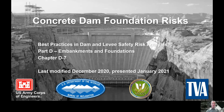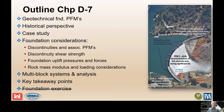Here is the outline for chapter D7. We have a summary of the primary geotechnical and foundation-related failure modes. We'll put this in a historical perspective for how concrete structures have performed. We'll do a quick case history from a concrete dam failure, and then we'll get into the foundation considerations: discontinuities and associated PFMs, discontinuity shear strength, foundation uplift pressures and forces.